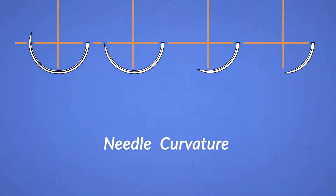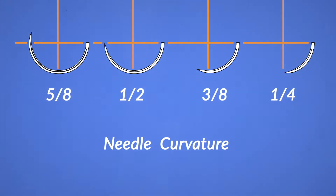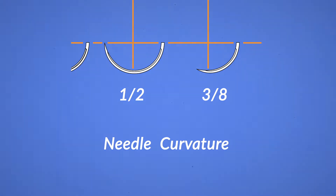The curvature of the needle is denoted as a fraction of a circle. It can range from one-eighth of a circle to five-eighths of a circle. The smaller the fraction, the smaller the curvature, thus the smaller the bite into the wound. Three-eighths and one-half curvatures are the most commonly used in dentistry.